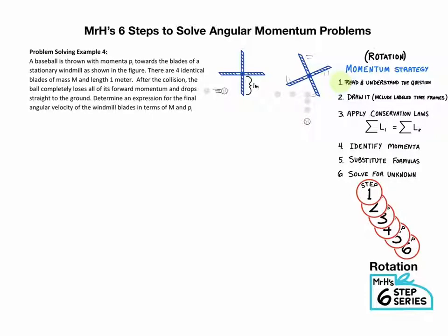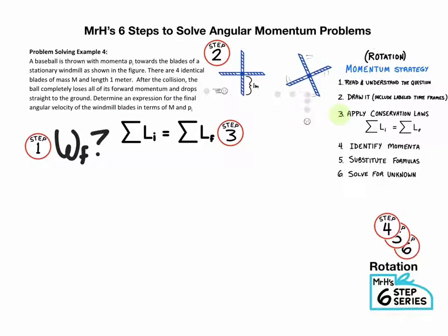All right, so as always, we do step one. We write the question, omega final question mark. And then step two, draw your picture. You probably just used the picture that was available. Step three, we write this line for step three every time. Step four, we see what had momentum, angular momentum. First the baseball did, RMV. And then afterwards, the baseball had none, it was just the fan blades.